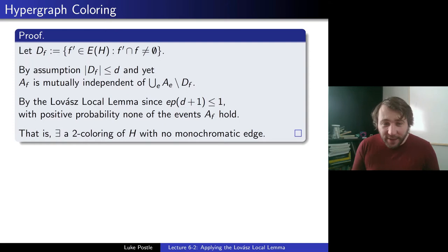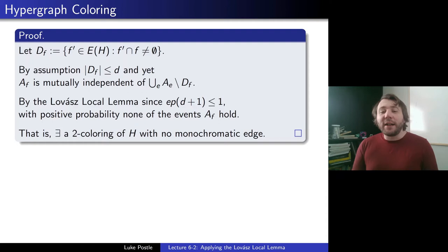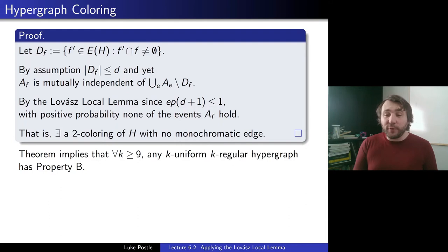That's a very nice simple result showing the power of the Local Lemma to prove things where you just have local conditions. The theorem implies that for every k ≥ 9, any k-uniform k-regular hypergraph has property B. So if your regularity — that's the degree — and your uniformity are the same and that's large, then indeed we are two-colorable.